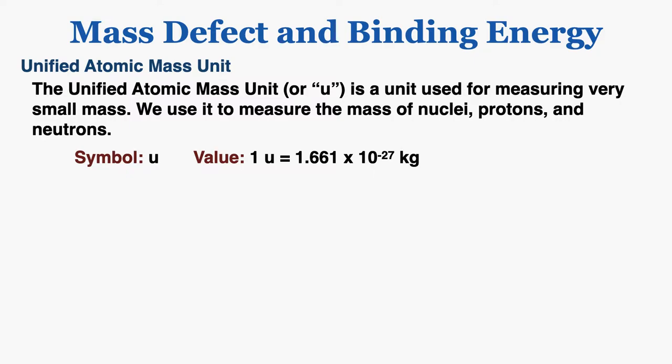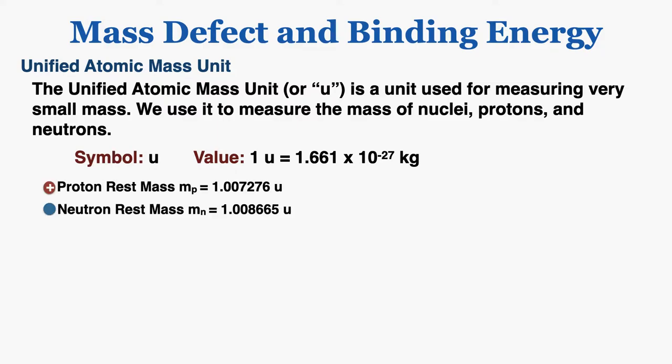We write that as lowercase u. This is a unit used for measuring very small mass — we use it to measure the mass of nuclei, protons, and neutrons. So 1u is equal to 1.661 times 10 to the negative 27 kilograms. The reason we use this is that when working with very small objects like protons and neutrons, it would be a pain to write out these very low exponents for every mass, so instead we just record them in unified atomic mass units.